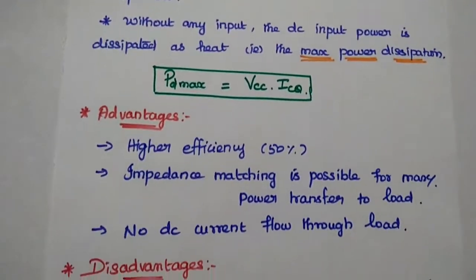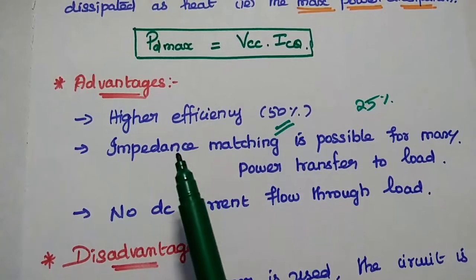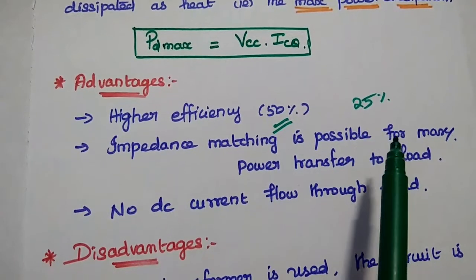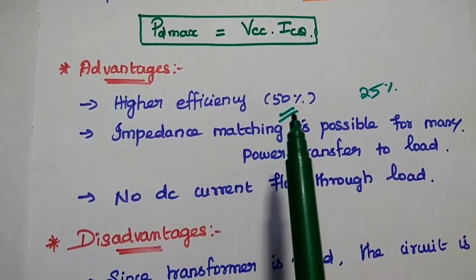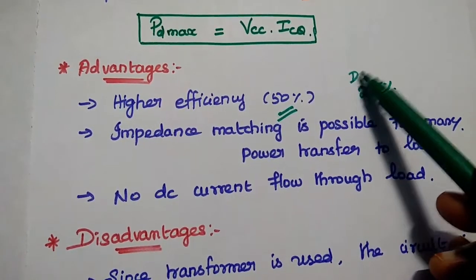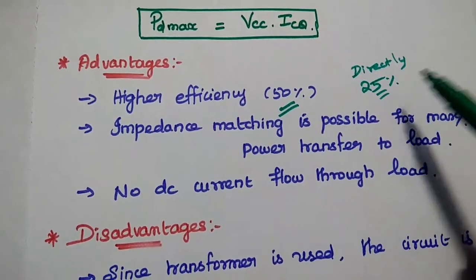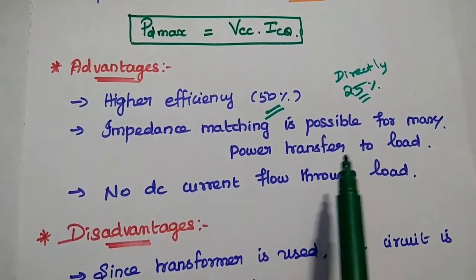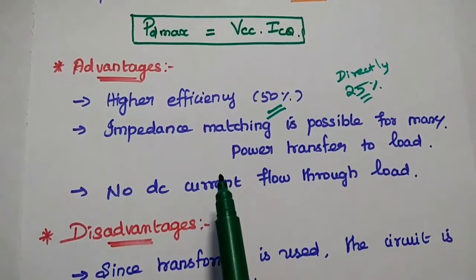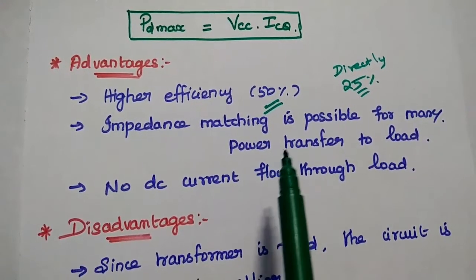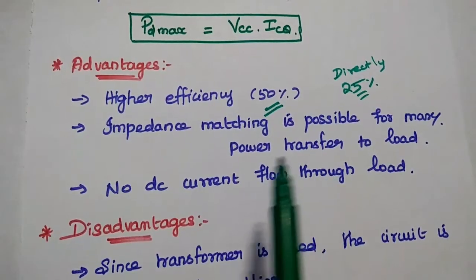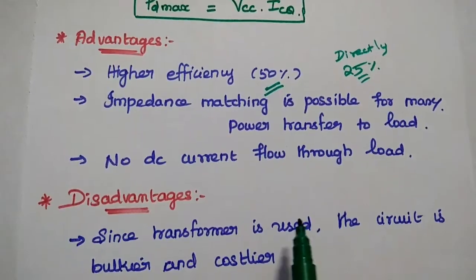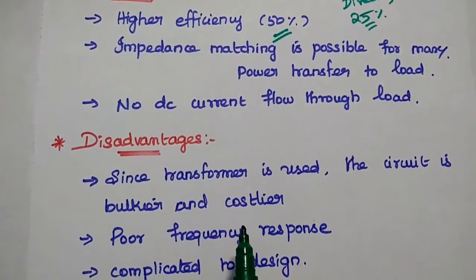Advantages of this transformer coupled amplifier: it provides very high efficiency when compared with directly coupled Class A amplifier — it provides 50% efficiency, whereas directly coupled Class A amplifier provides only 25%. Impedance matching is possible for maximum power transfer to the load; the transformer is mainly used to provide impedance matching between the output and the load. There is no DC current flow through the load, so the wastage of power is minimized.